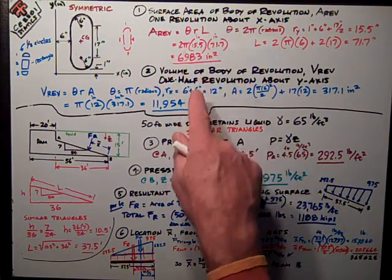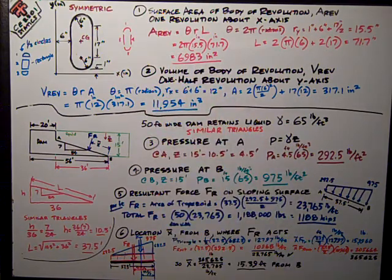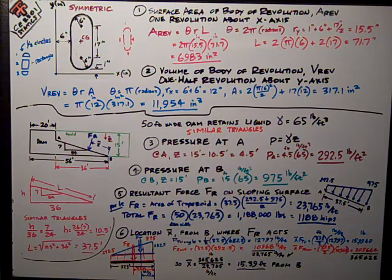Do all the math. Note that I've got inches times inches times radians, which are dimensionless, and I come up with 6,983 square inches, which is what I want for a surface area.